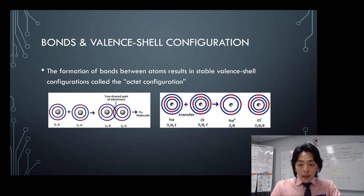In either case, what I want you to be able to see is that the outermost shell will gain 8 electrons or be considered to be 8. That's the octet configuration.